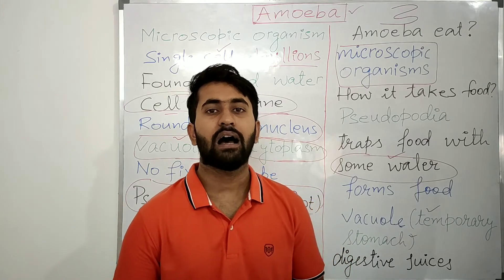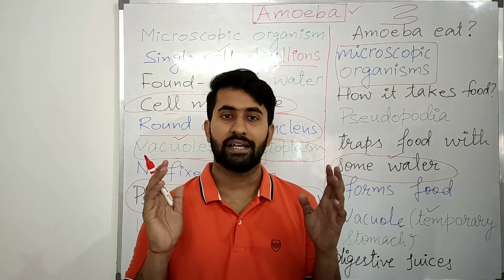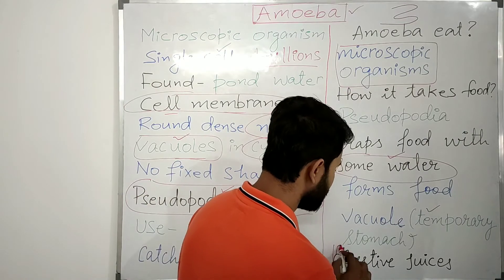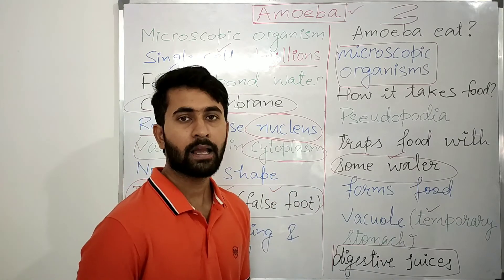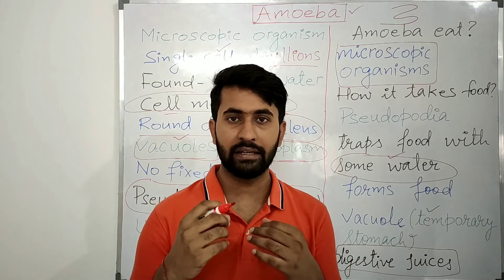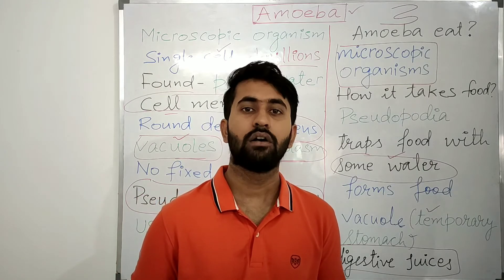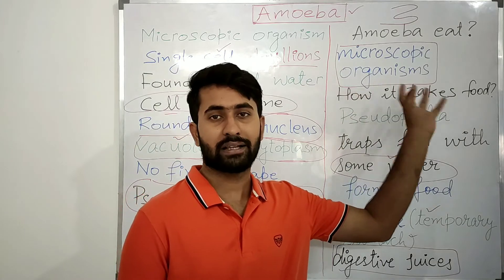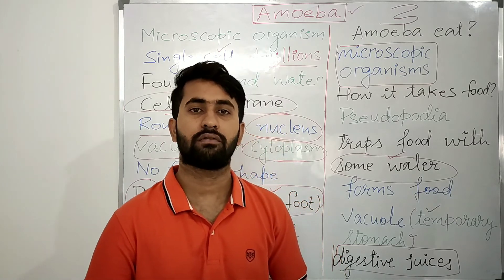The similarity between amoeba and humans is that digestion of food takes place with the help of digestive juices. The difference is that humans have a mouth for taking food and an anus for removing waste, whereas amoeba has neither a mouth nor a fixed place for removing waste.